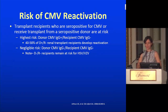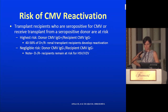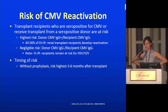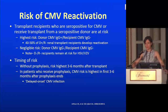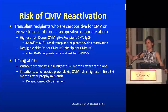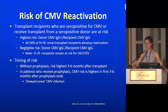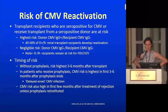Patients with negligible risk are the CMV IgG-negative donor and recipient combination, though they remain at risk for HSV and VZV, so they still need herpes virus prophylaxis. Without prophylaxis, the highest risk period is three to six months after transplant. In patients who receive prophylaxis, CMV risk is highest in the first three to six months after prophylaxis ends — this is called delayed-onset CMV infection. Giving prophylaxis does reduce the overall rate of CMV reactivation because it gets people further out from induction immunosuppression, allowing their immune system to rebuild somewhat so it can respond to the virus.